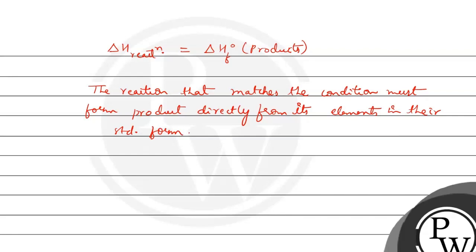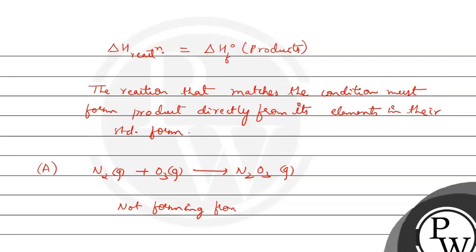Let's analyze each option. Option A: N₂ gas plus O₃ gas gives N₂O₃. Here, N₂O₃ — the product formed — is not forming from its elements in their standard form. So Option A does not satisfy the condition.